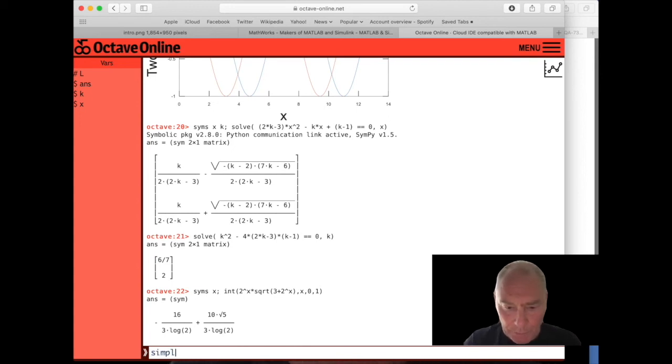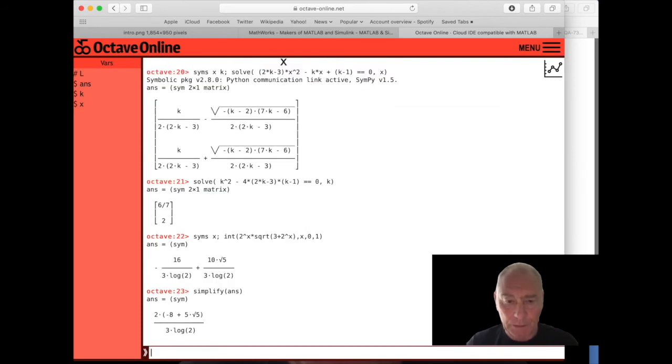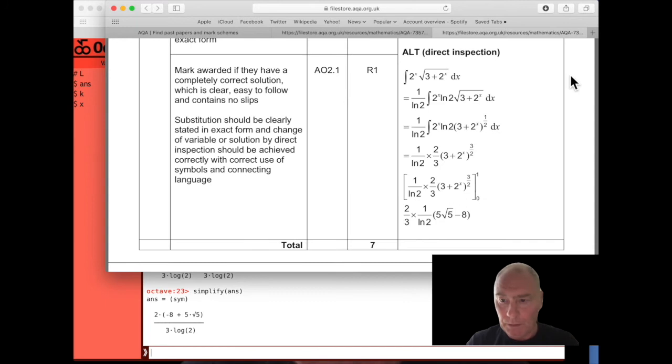So let's see about simplifying. Now I could type it all in again and ask it to simplify, but actually if I just type ans, that means take the previous answer and simplify it. Ah, that looks much better. Here we've got five root five minus eight in the numerator. Five root five minus eight multiplied by two. And a three log two in the denominator. And log here in octave is the same as ln, the natural logarithm. So we're pretty happy with that.